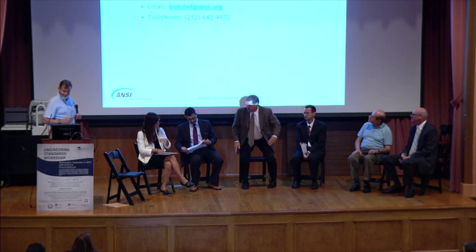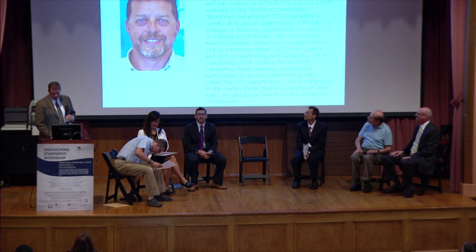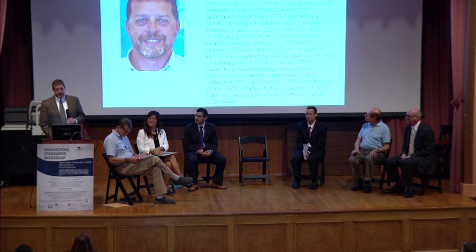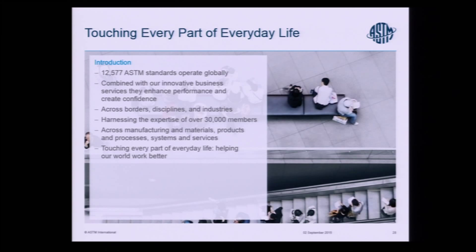Our next speaker is with ASTM International — Jeff Atkins. I've been with ASTM for 15 years. I'm not a technical person, but I manage a wide variety of technical committees. ASTM is a standards development organization that's been around since 1898. It actually started when the railroads were coming across the United States because they had to develop standards for the steel being used. So that's where ASTM got its initiation — its first committee is ASTM A1, its Committee on Steel. ASTM used to be known as the American Society for Testing Materials and changed that name back in 2001.